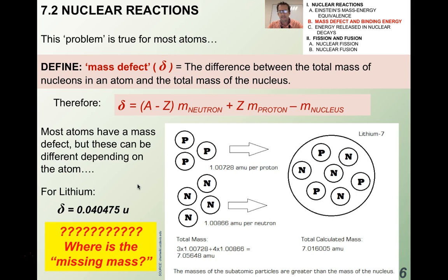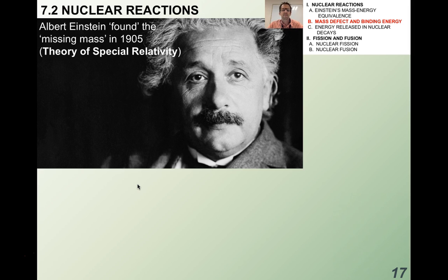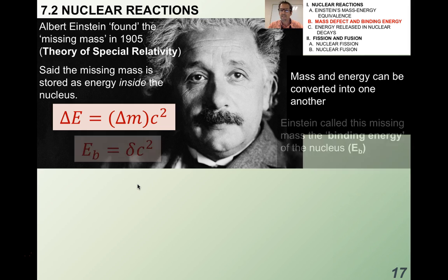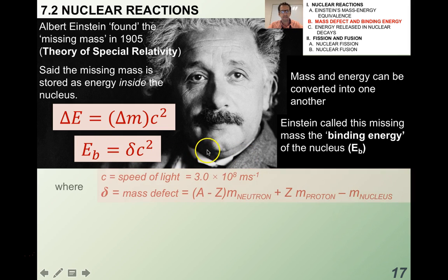Where is the missing mass? Einstein explained in his theory of special relativity that the missing mass is actually stored as energy inside the nucleus — mass and energy can be converted into one another. He came up with the phrase binding energy of the nucleus, E sub B. The binding energy is given by the mass defect times C squared: E_B equals delta times C squared, another form of E equals MC squared.